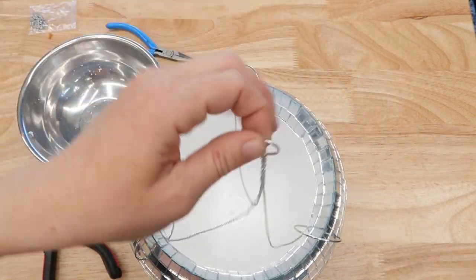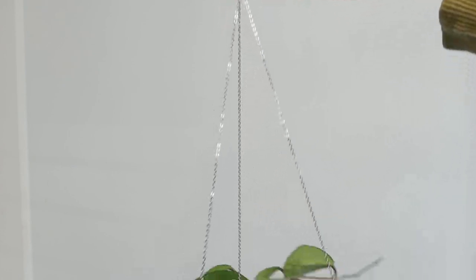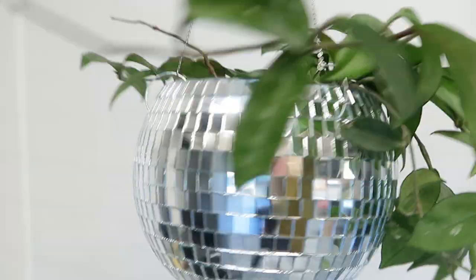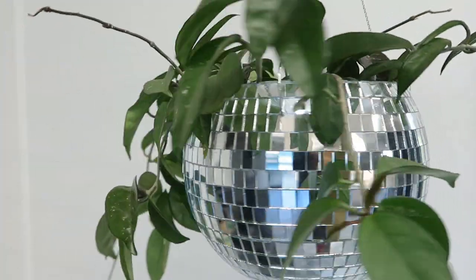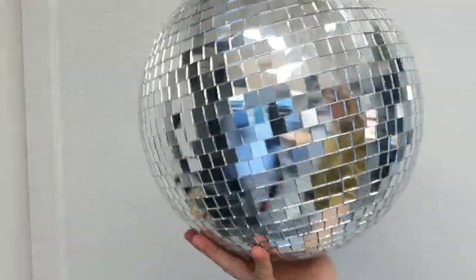The medium 8 inch diameter disco ball definitely was the easiest to construct because there was no hollowing out of the inside and it was pretty straightforward. Now let's dive into the large 12 inch disco ball.